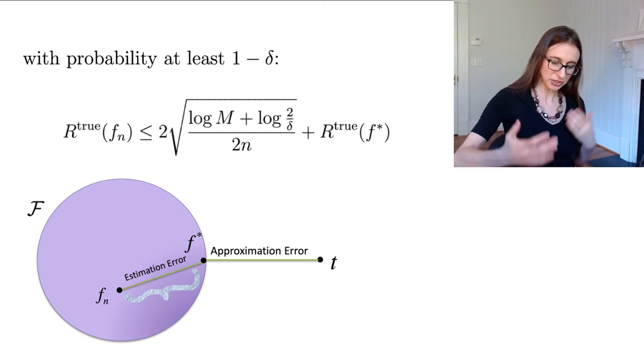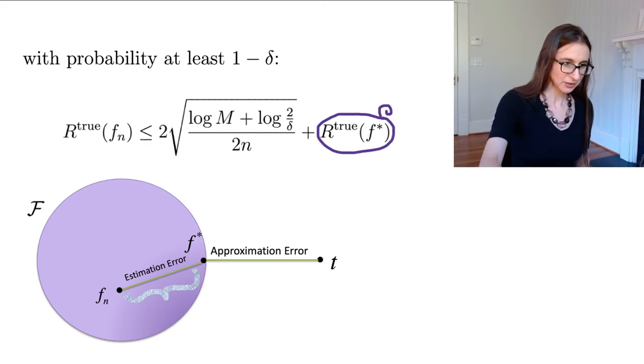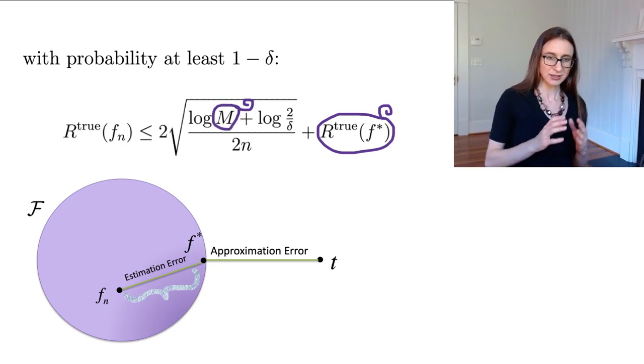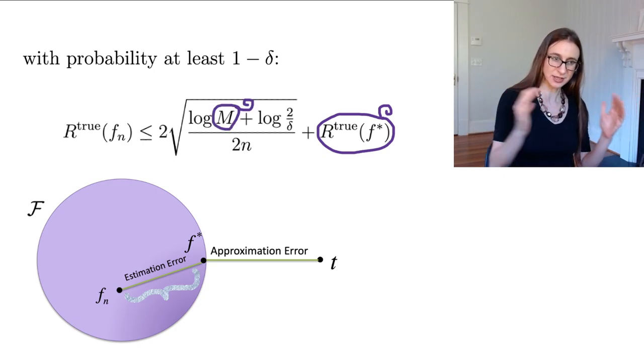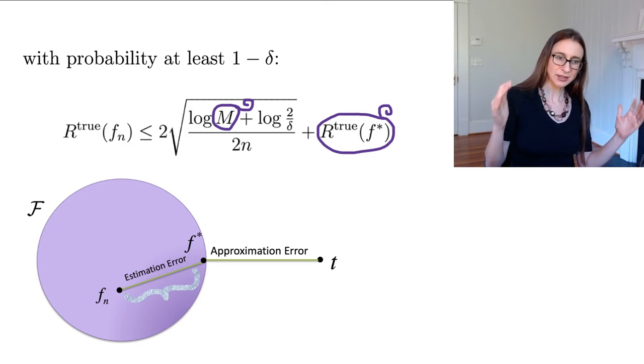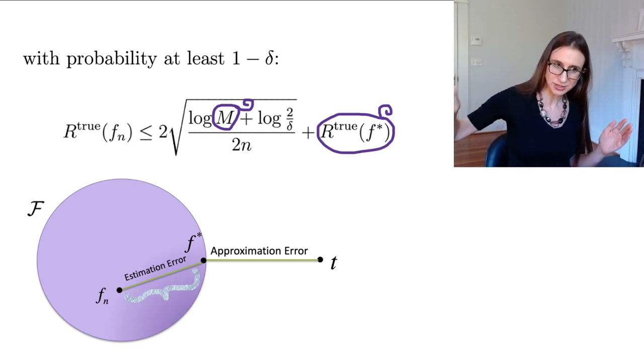And if you think about it, these terms actually kind of trade off with each other. They actually contrast with each other because as the size of the set increases, then M increases and then the true risk of f star decreases because f star gets closer to t.